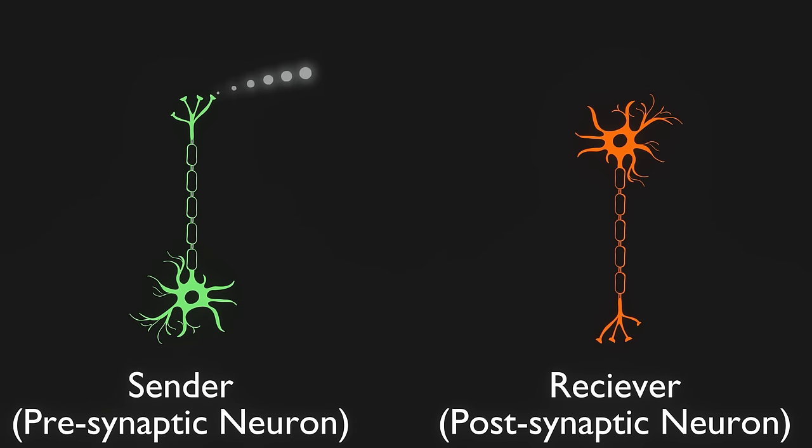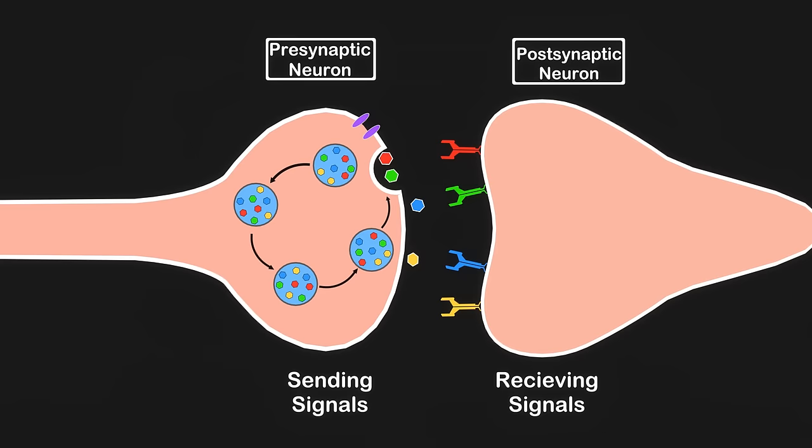This is the neuron that's receiving the signal from a presynaptic neuron. Pre and postsynaptic just tell you whether the neuron we're talking about is the one sending the signal or receiving the signal. This selectivity ensures that neurotransmitters only bind to the appropriate receptors, allowing for precise communication between neurons.